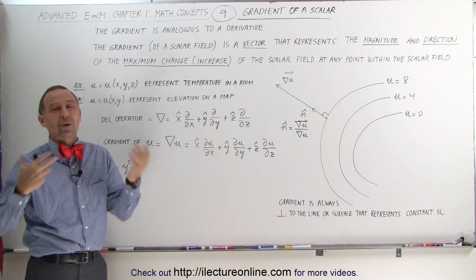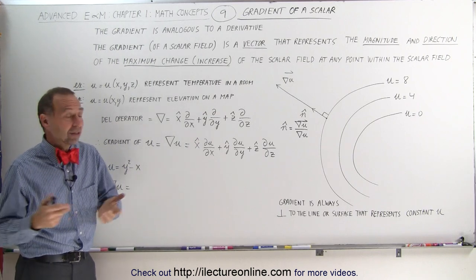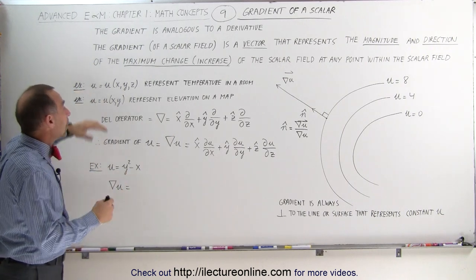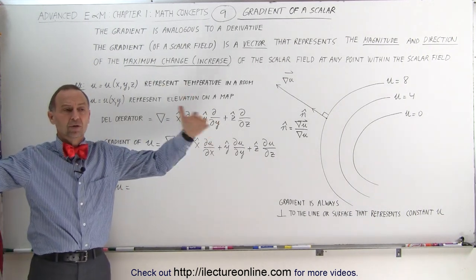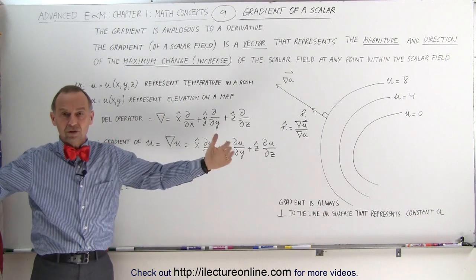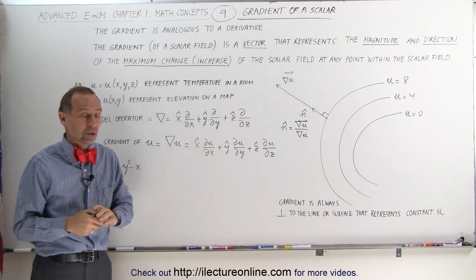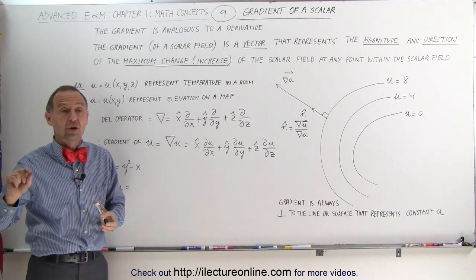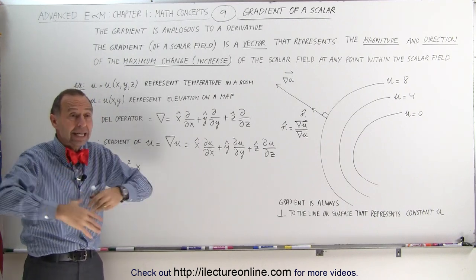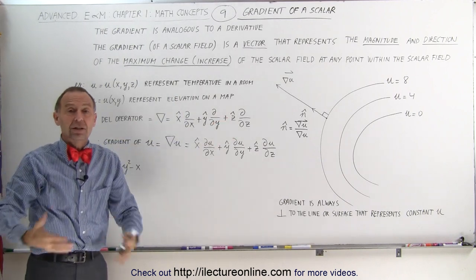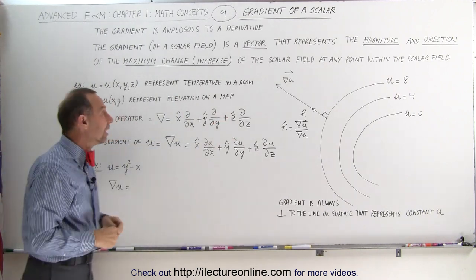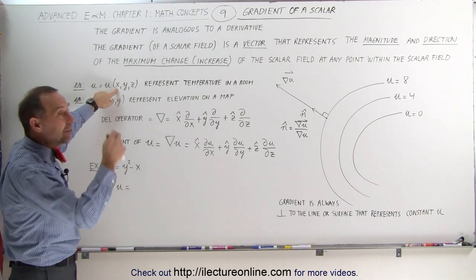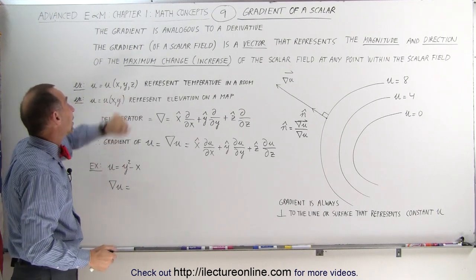Now you may say, well, I really don't know what a scalar field is. Not a lot of us do, but for example, let's say we want to represent the temperature in a room. It is a three-dimensional space — it has an X, Y, and Z coordinate — and when we go to a different place in the room, the temperature may be different.